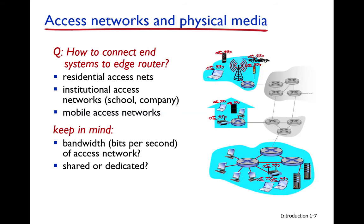Access network and physical media: how to connect end systems to the edge routers — the first router of the internet. The interconnection of routers is called the core network. The access network connects end systems to the edge of the internet.